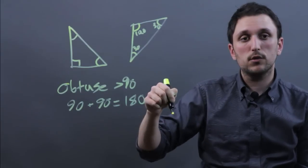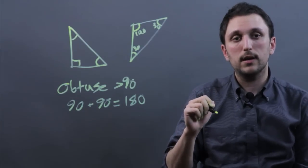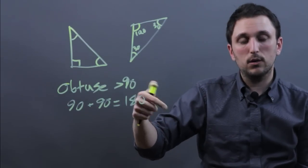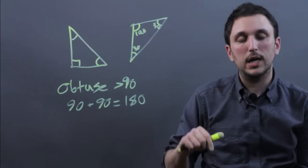So in an obtuse triangle, we have one obtuse angle because obtuse angles are greater than 90 and two angles greater than 90 would add up to more than 180.